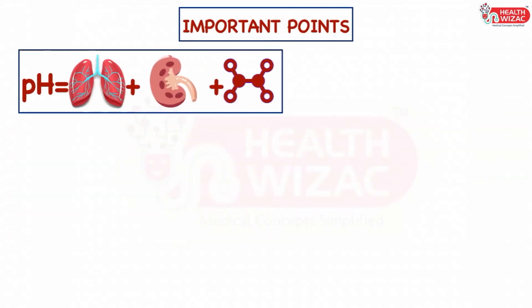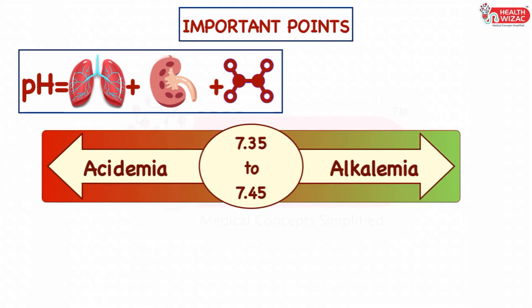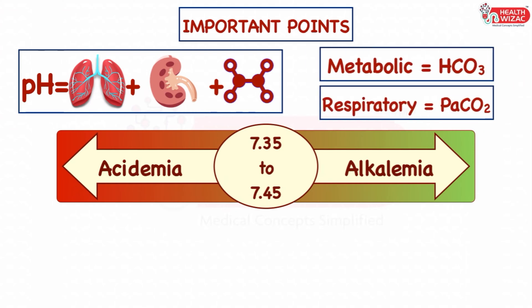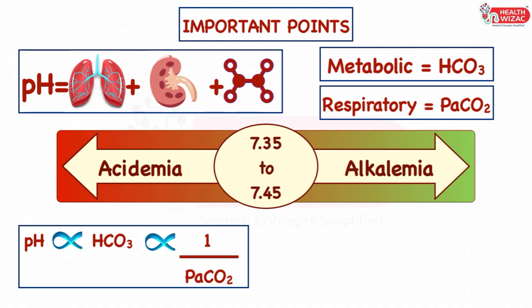Normal pH is maintained by the lungs, kidneys, and buffer system. Acidemia is pH less than 7.35, and alkalemia is pH more than 7.45. For metabolic disorders, check bicarbonate level, and for respiratory disorders, check PaCO2 level. pH is directly proportional to bicarbonate and inversely proportional to PaCO2 level.